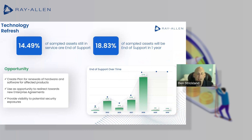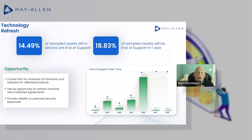Moving on to technology refreshes. One of the things I'm going to be bringing up as we go through the discussion today are real statistics from real customers — data summarized across thousands of customers across the world, multi-vendor but with a large majority being Cisco. On average, in any given customer, about 14.5% of all assets are already at end of support within that customer.